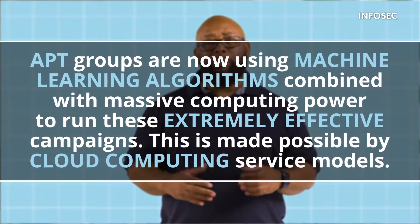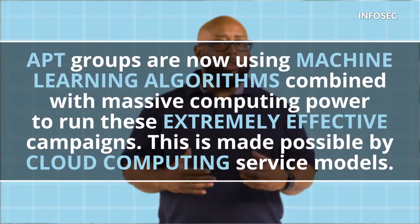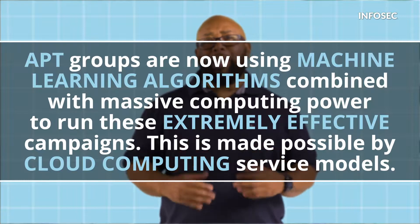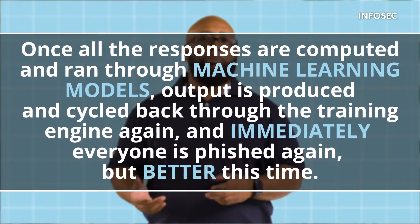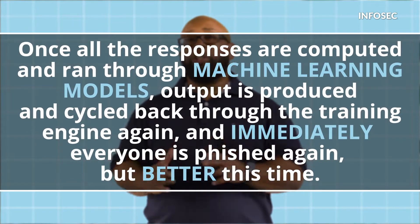This is where machine learning comes in. APT groups are now using machine learning algorithms combined with massive computing power to run these extremely effective campaigns, made possible by cloud computing service models. They build training models based on feedback from phishing attempts, then start phishing. Once responses come back, all of this data is fed into cloud servers designed to handle massive amounts of data - we're talking 1,000 machines with 4 terabytes of RAM. Once all the responses are computed and run through machine learning models, output is produced and cycled back through the training engine, and immediately everyone is phished again, but better this time. This process is painfully effective.